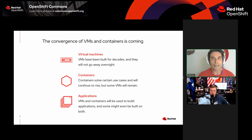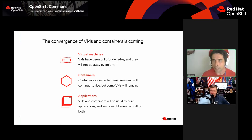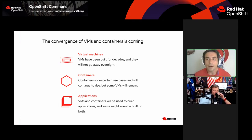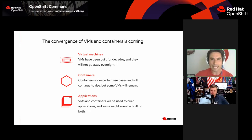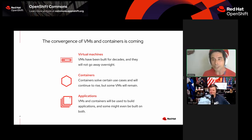We went back to the drawing board and looked at the way we were managing and orchestrating containers. A lot of what we learned fed into the Kubernetes project. Back around 2016, we thought — instead of trying to manage containers like small virtual machines, why don't we try to manage virtual machines like long-lived, high-profile containers? That's really where the KubeVirt project began, looking at ways to get virtual machines running in Kubernetes in a native way that complied with the Kubernetes API and fit into CI/CD pipelines and modern DevOps architecture.